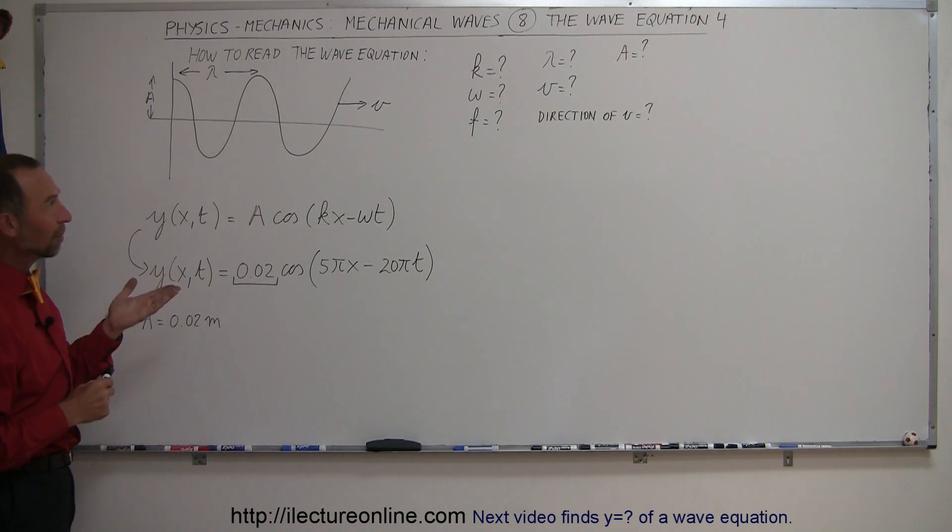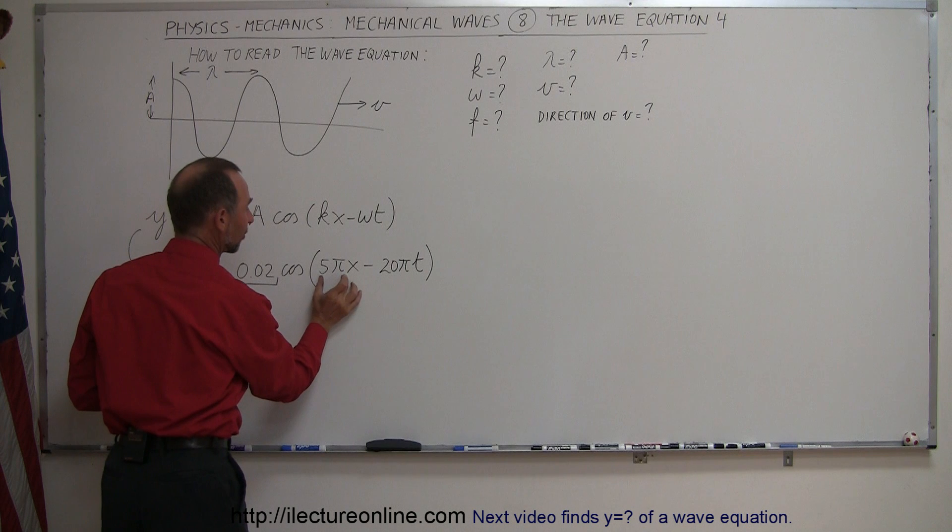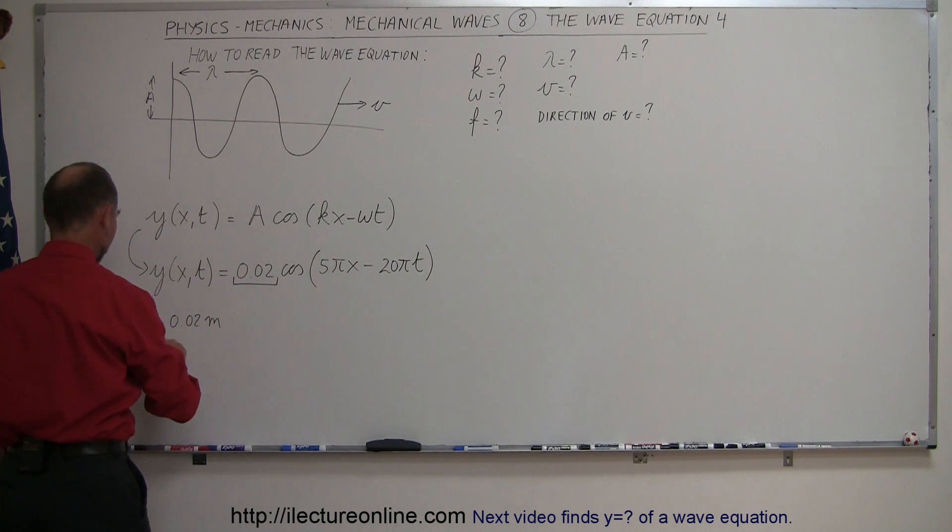All right, wave number, that's k, that would be the constant in front of the x, so we can say that k is equal to 5 times pi.